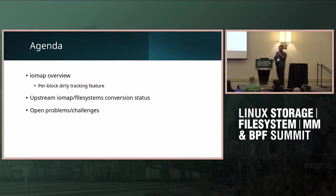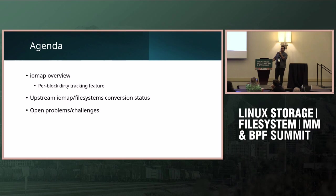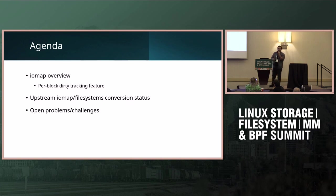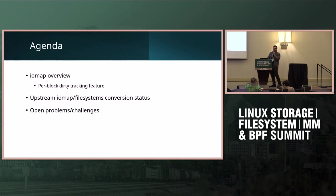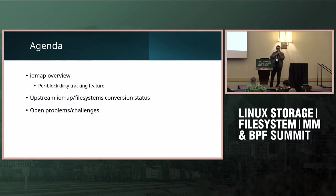As part of the agenda, I'll make sure everybody is on the same page. I'll go over a brief overview of IOMAP, and then per-block dirty tracking is a feature we did, which will help us understand the metadata requirements within IOMAP. Then we can go over the upstream conversion status of different file systems and discuss what we plan to do further. There are also some open problems and challenges I faced while converting EXT2, and I'd like more discussion on that.